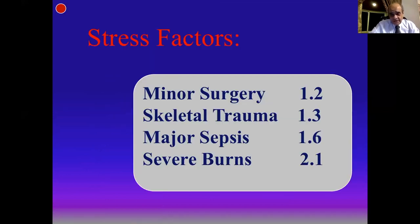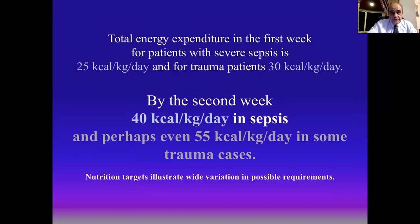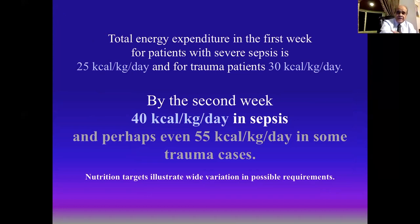Stress factors differ from patient to patient. After estimating REE or BEE, multiply by the stress factor ranging from 1.2 up to 2.1 for severe burns or extensive trauma. For total energy expenditure, three standards exist: indirect calorimetry, predictive equations, and empiric rough calculations. In the first week for severe sepsis patients, give 25–30 kcal/kg/day.